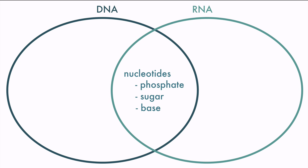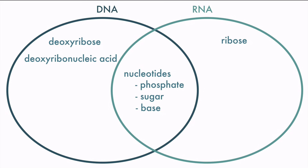But the sugars in DNA and RNA are different. DNA is made with deoxyribose and RNA is made with ribose sugar. This is where they get their names: deoxyribonucleic acid and ribonucleic acid.